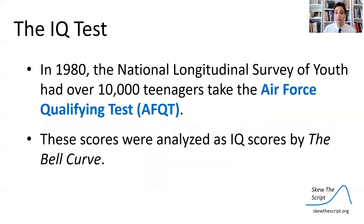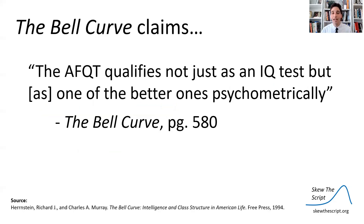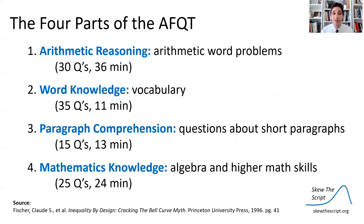The IQ test they used was known as the Armed Forces Qualifying Test, or AFQT. In 1980, the National Longitudinal Survey of Youth had over 10,000 testers take that test — a test developed by the Air Force to evaluate new recruits. These scores were analyzed as IQ scores by The Bell Curve. The authors claim the AFQT qualifies not just as an IQ test, but as one of the better ones psychometrically. The AFQT was divided at the time into four parts: arithmetic reasoning, word knowledge, paragraph comprehension, and mathematics knowledge.